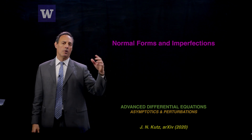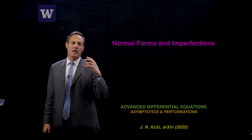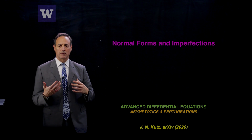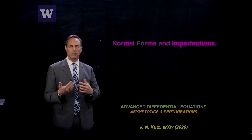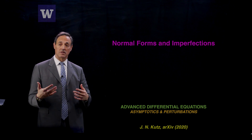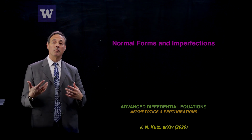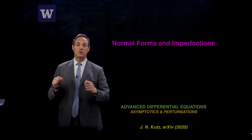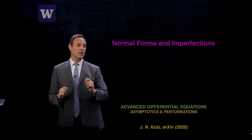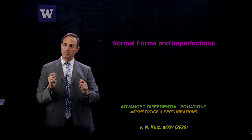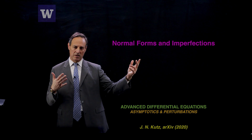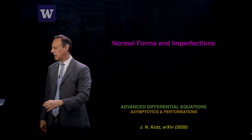The idea of a normal form is that there are only a certain class of instabilities that actually exist in dynamical systems — these are called the normal forms. One of the things you'd like to do in understanding your system is first get its normal form bifurcation out. That gives you a great deal of insight into what's actually driving the physics and the instability itself. Then the question is, how well do these bifurcations hold up under perturbation? Are they structurally stable? We'll talk about that in the context of what are called imperfect bifurcations.